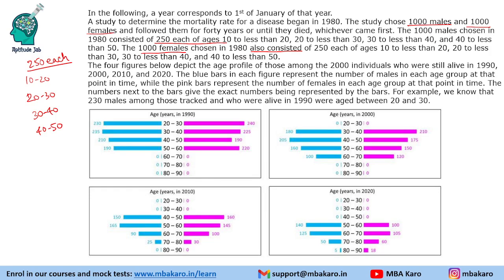The 4 figures below depict the age profile of those among 2000 individuals who were still alive in 1990, 2000, 2010, and 2020. The blue bars in each figure represent the number of males in each age group at that point in time, while the pink bars represent the number of females in each age group. The numbers next to the bars give the exact numbers being represented.